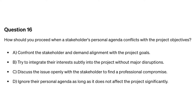Question sixteen. How should you proceed when a stakeholder's personal agenda conflicts with the project objectives? A. Confront the stakeholder and demand alignment with the project goals. B. Try to integrate their interests subtly into the project without major disruptions. C. Discuss the issue openly with the stakeholder to find a professional compromise.